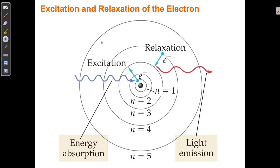As the electron falls down, it can't exist in the space in between rungs, but it can go from one rung and suddenly appear down at n equals 4, then lose a little more energy and relax down to n equals 3, then n equals 2, then n equals 1. So when excited, an electron can absorb energy and get excited to an outer rung. And when it's on an outer rung, it can relax back down to an inner rung. To move from an inner orbital to an outer orbital, an electron must absorb energy. To relax from an outer rung down to an inner rung, it must release energy.